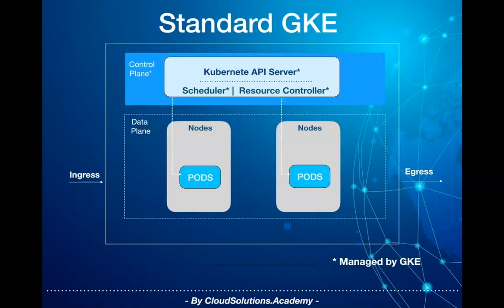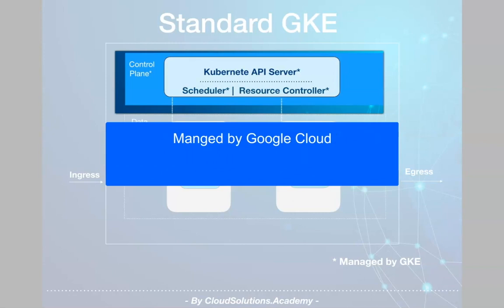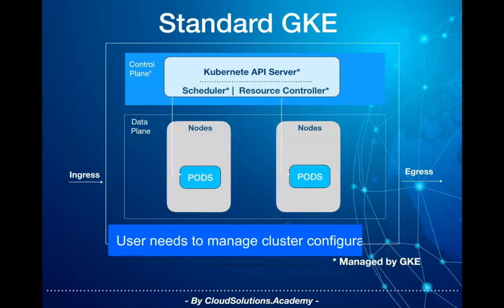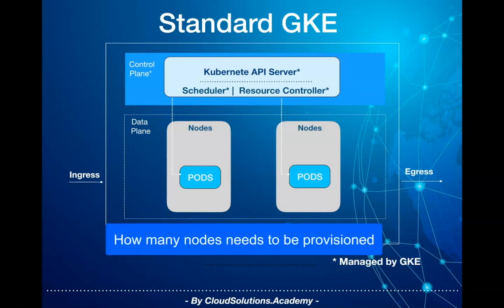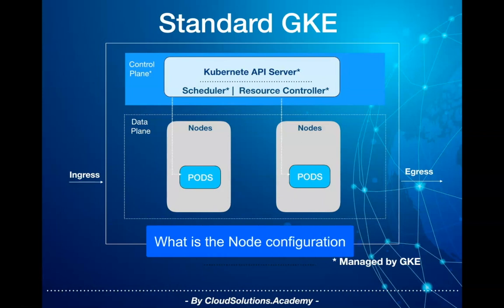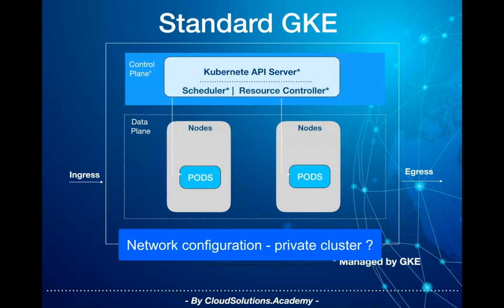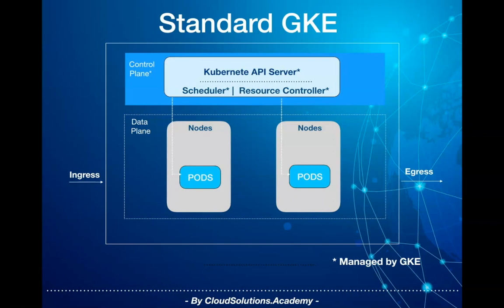Prior to GKE Autopilot, only the control plane was managed by Google Cloud as a managed service. Management of the control plane — for instance version upgrades and security — was handled by Google Cloud and was transparent to the end user. However, users still needed to make certain decisions on cluster configuration, such as how many nodes to provision, node configuration, how much RAM is required, minimum scalability requirements, how to secure the infrastructure, and network configuration like whether to go with a private cluster.